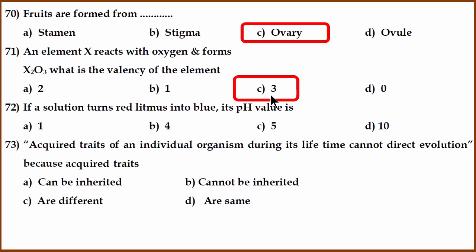Now the 72nd question. If the solution turns red litmus into blue, what is the pH? If it is alkaline, the pH is more than 7.